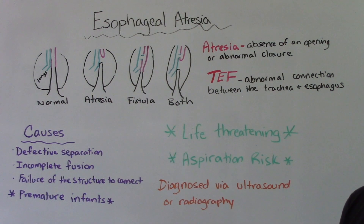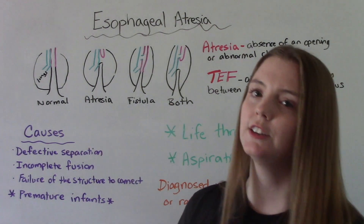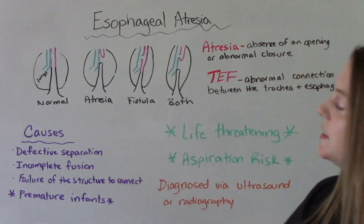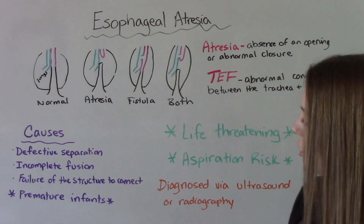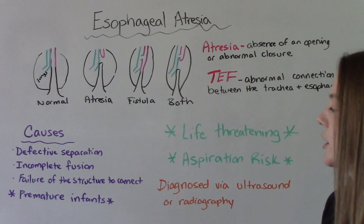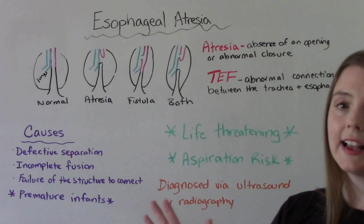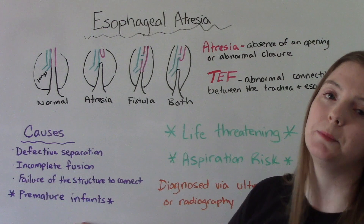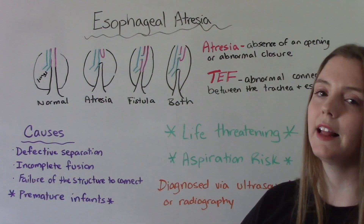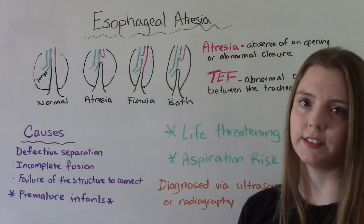What are the causes of this? This is a congenital anomaly, so you're born with this. It could be caused by defective separation, incomplete fusion, or failure of the structures to connect. The highest risk group for having this are premature infants — more likely to be seen in babies born before 37 weeks.